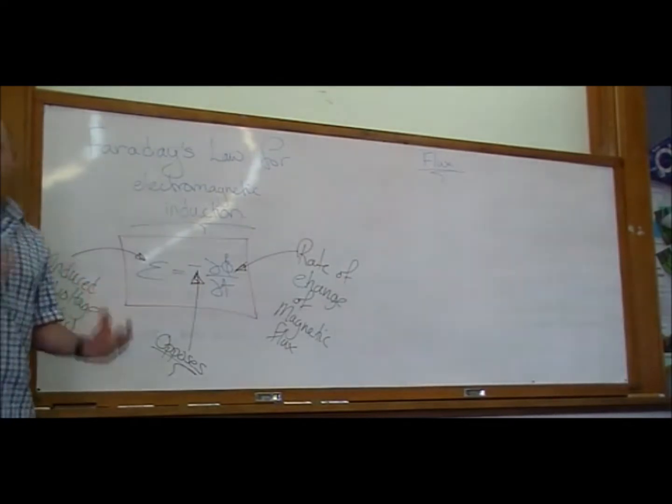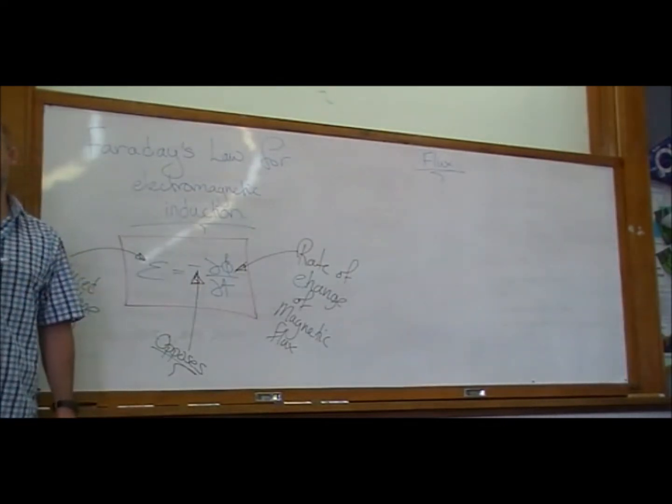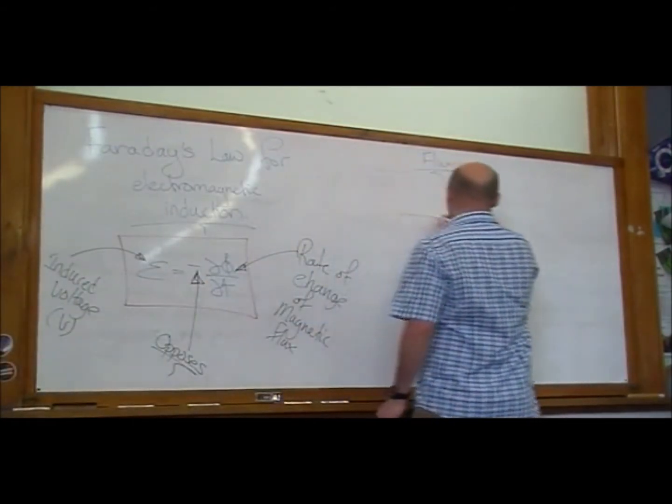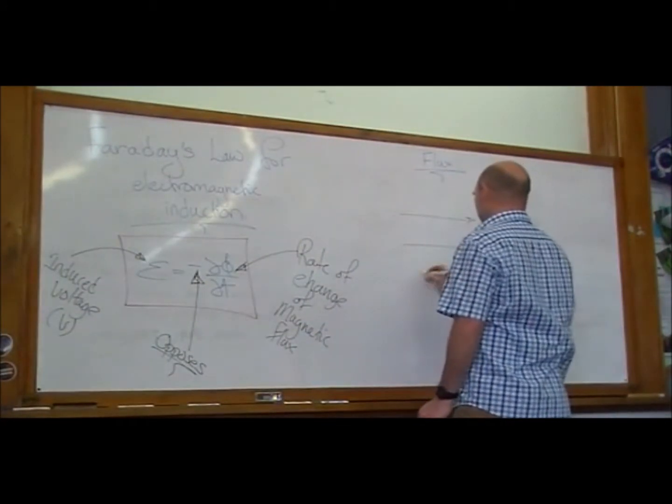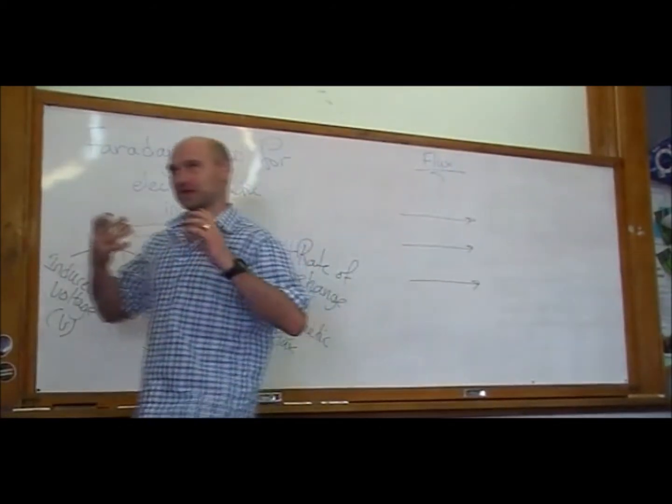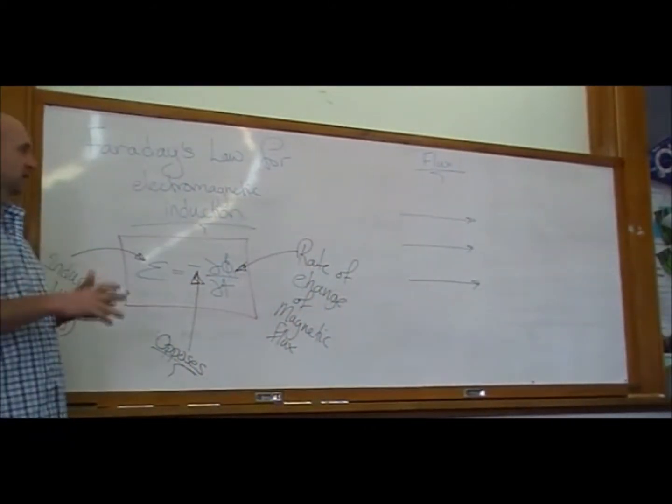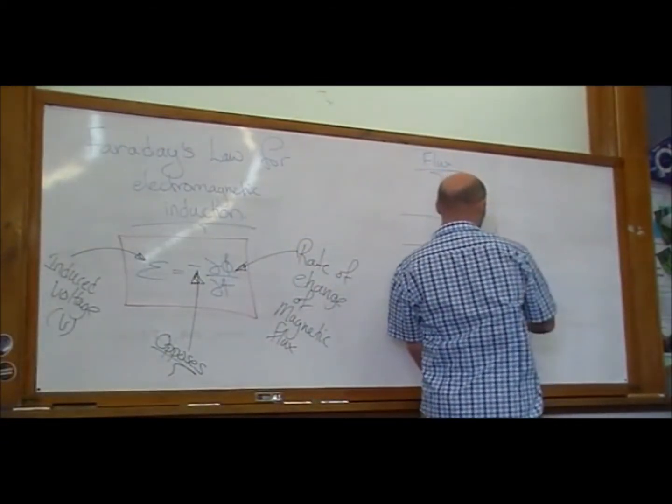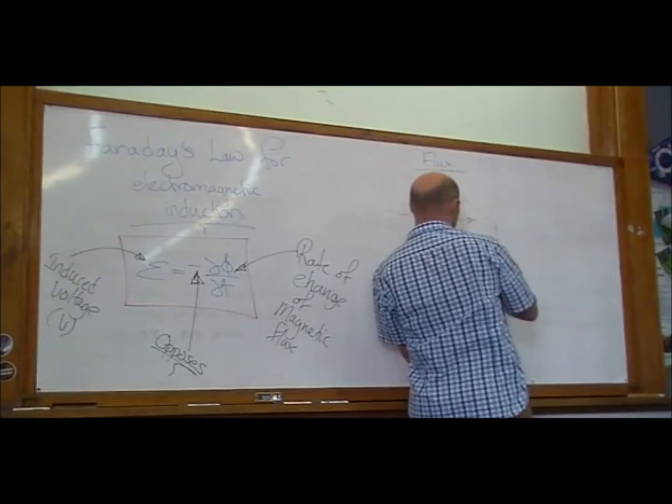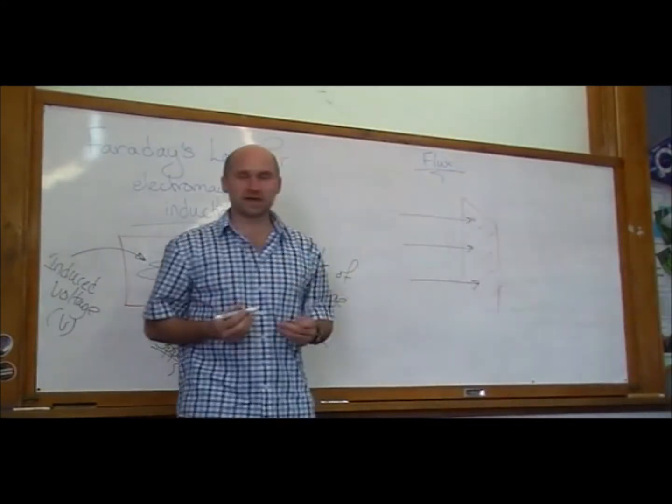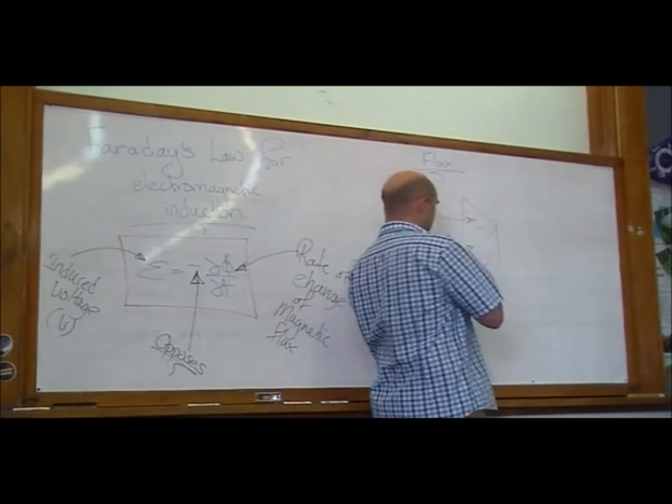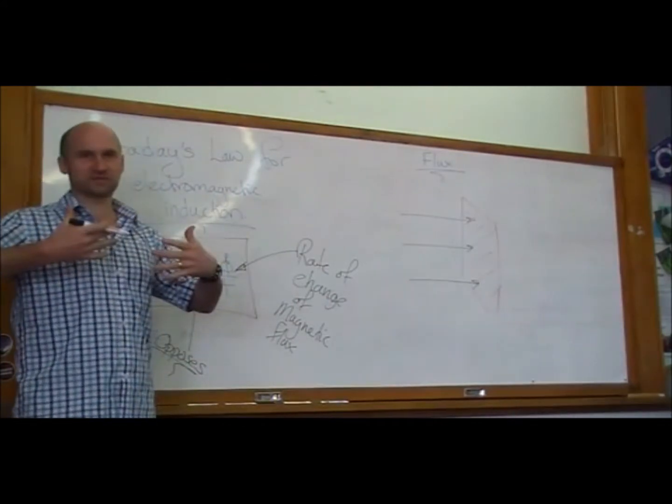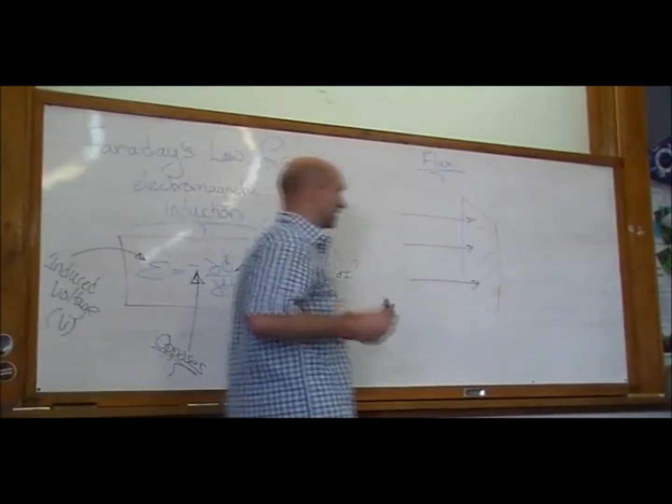And so the question I can hear on your lips is what is this flux thing? And so flux is the idea of combining together a flow of something through an area. And so when we're thinking about magnetic flux, what we're thinking about is we have an area, an imaginary area, the flux is equal to the amount of magnetic field that is perpendicular to that area.